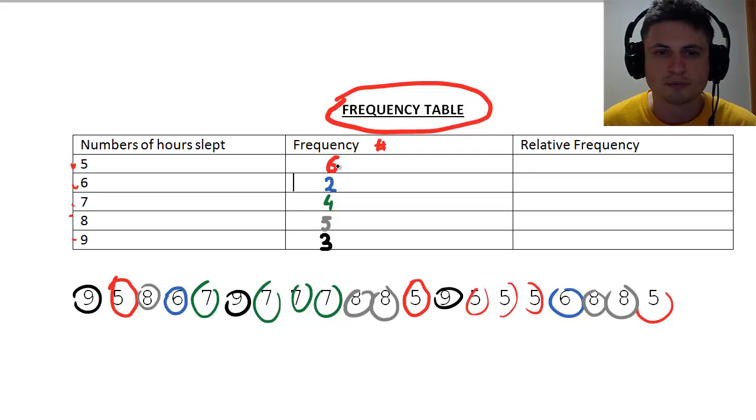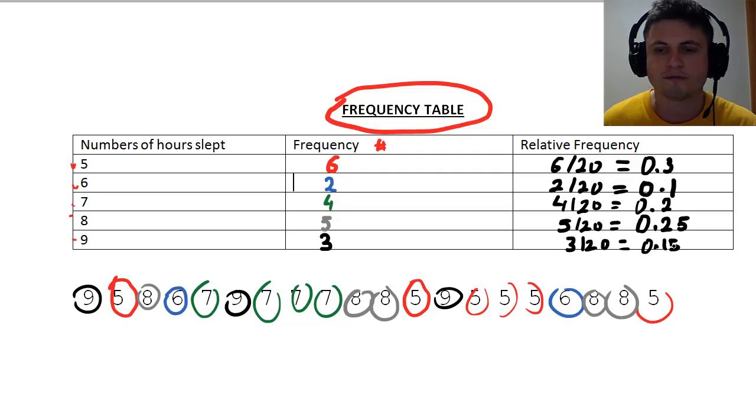Now relative frequency is something a little bit different. This is where I collect all the numbers first. I know there's going to be 20 of them. Then in terms of percentages or fractions, how many times does this number appear in comparison to all the other numbers? In this case, it's going to be six divided by 20, which can also be written as 0.3. So relative frequency of 0.3, this would be 2 divided by 20, or 0.1, and 0.15 for the last one.